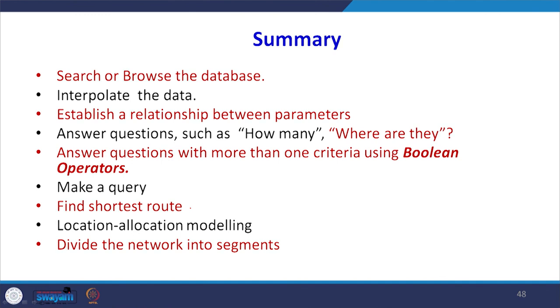In conclusion, we can use spatial analysis and network analysis for searching and browsing the database, interpolating scanty data, establishing spatial relationships between different parameters, answering queries about how many and where, applying Boolean operators for analysis, finding the shortest route between two points, doing location allocation modeling, and dividing the network into various segments depending on priority.